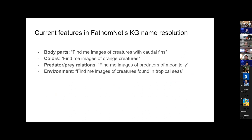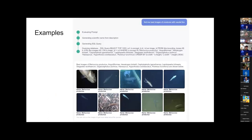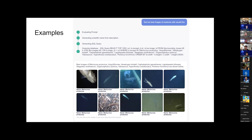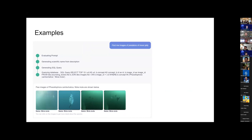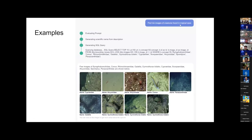The current features we support are body parts, colors, prey, predator-prey relations, and environments. If it's not one of these features, it falls back to the older unstructured text name resolution. For example, it can find creatures based on a body part called 'dorsal fin', or find them based on the color orange, or find predator-prey relations, or search based on the environment. All of this information comes from the Wikipedia data.